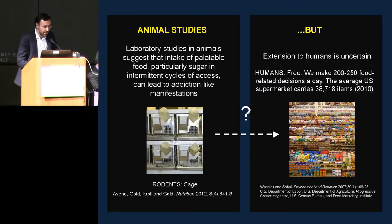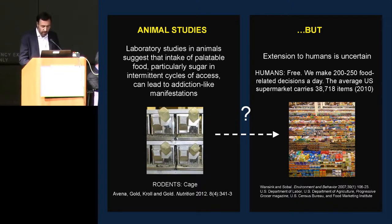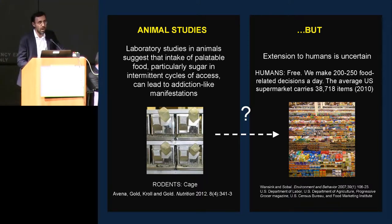There are still key open questions. The majority of evidence comes from animal laboratory studies looking at the impact of sugar provided in intermittent cycles of access — this is where the full spectrum of addiction-like manifestations appears. But it is very hard to extrapolate those findings to humans, because we are free individuals living in very complex food environments. On a daily basis we make around 200 to 250 decisions related to food, and we navigate supermarkets carrying approximately 40,000 items. The complexity of human eating behavior is really far greater than a restrictive cage.